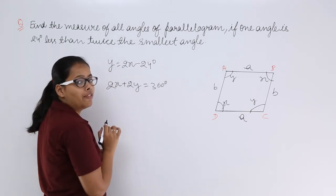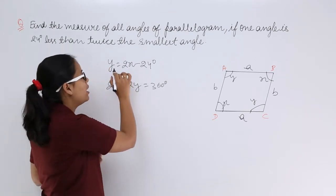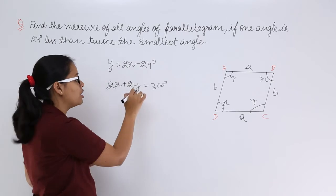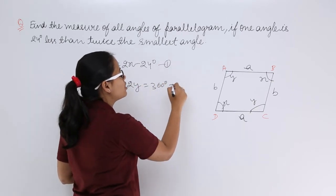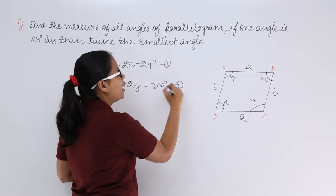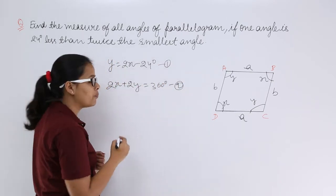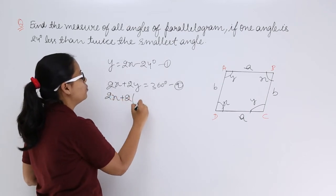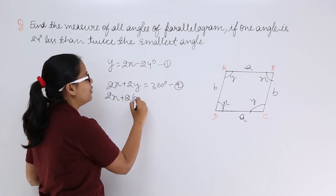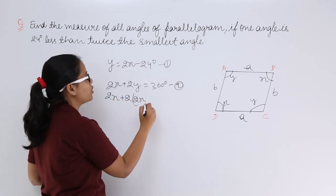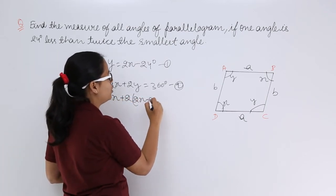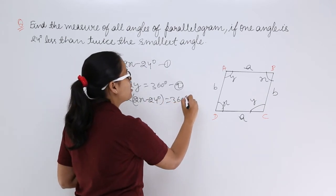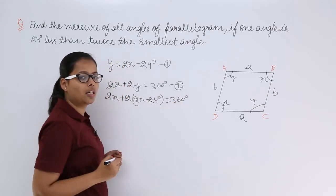We have the value of y in terms of x. Calling equation 1: y = 2x − 24, and equation 2: 2x + 2y = 360. Substituting the value from equation 1 into equation 2, we get: 2x + 2(2x − 24) = 360.